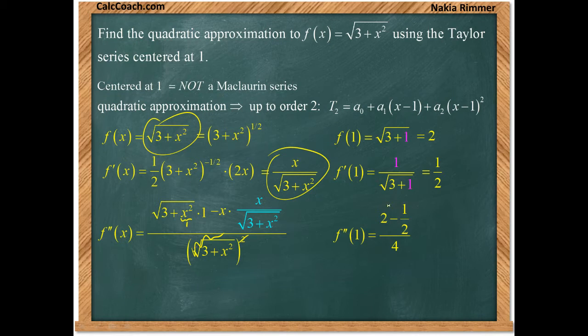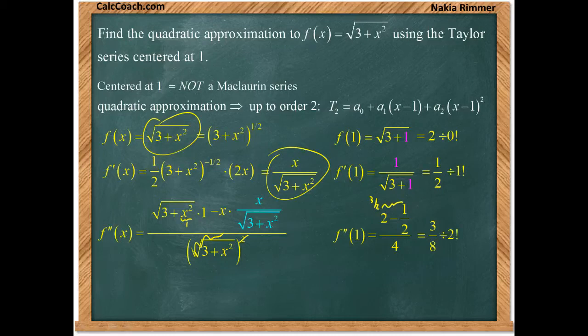Well, 2 minus a half is just 3 halves. If we take 3 halves and divide it by 4, we get 3 eighths. This isn't the end of the story, though. So, these are just the numerators. We divide by n factorial, each individual term.